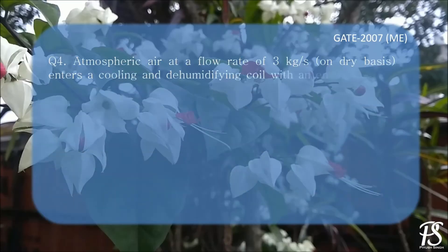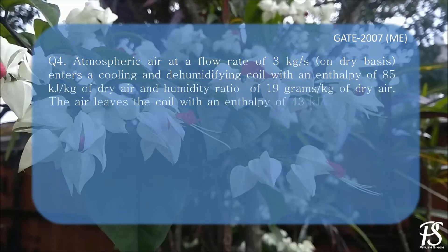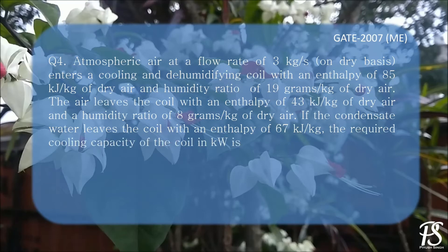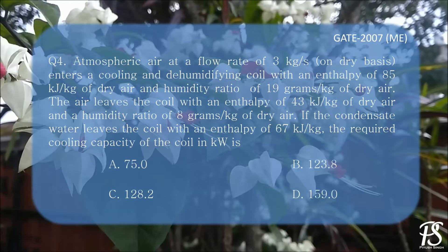Atmospheric air at a flow rate of 3 kg per second on a dry basis enters a cooling and dehumidifying coil with an enthalpy of 85 kJ per kg of dry air and a humidity ratio of 19 g per kg of dry air. The air leaves the coil with an enthalpy of 43 kJ per kg of dry air and a humidity ratio of 8 g per kg of dry air. If the condensate water leaves the coil with an enthalpy of 67 kJ per kg, the required cooling capacity of the coil in kW is — the correct option is C, 128.2.